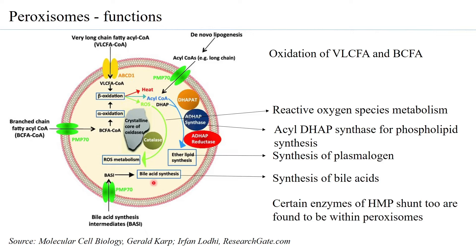Peroxisomes also carry out synthesis of bile acids, and contain certain enzymes of the HMP shunt, enabling reactions pertaining to that pathway. Peroxisomes are also able to detoxify several xenobiotics. Interestingly, in fireflies, luciferase — which is responsible for producing luciferin and generating the characteristic glow — has also been found to be part of the enzyme complement of the peroxisome.